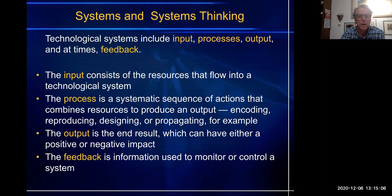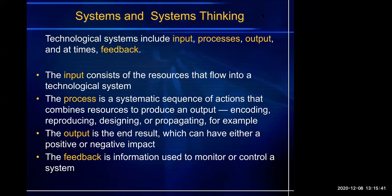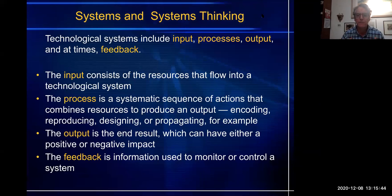Output is just output. The feedback is information used to monitor or control a system. In an open-loop system, what am I — the human? Am I input, a process, output, or feedback? I am the feedback — I am the one that has to adjust the system if it's putting out too much or too little, or the toast didn't turn out right. Open loops need a human. Closed loops have something like a thermometer measuring the output of the system and providing feedback back into the system.